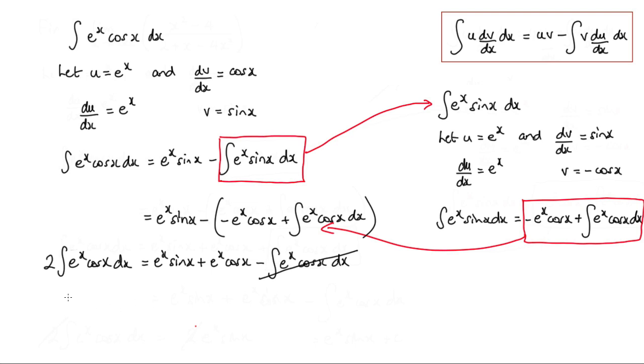So now what we can do is we can say that the integral of e to the x cos x dx is equal to, now I'm going to factor out the e to the x here, so we've got e to the x bracket sin x plus cos x divided by 2. And just remember that we need to add on the constant of integration.